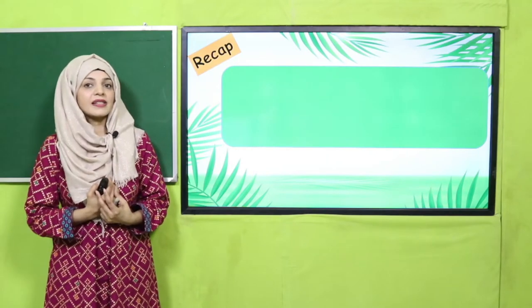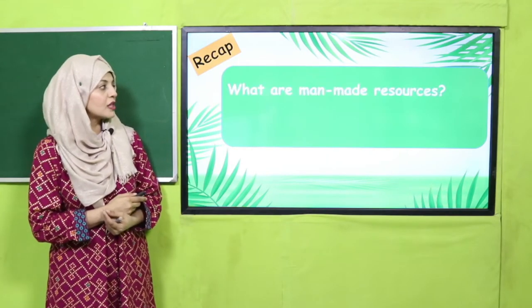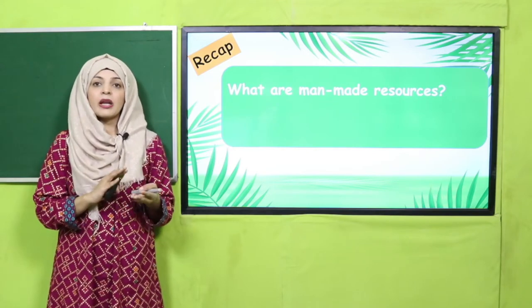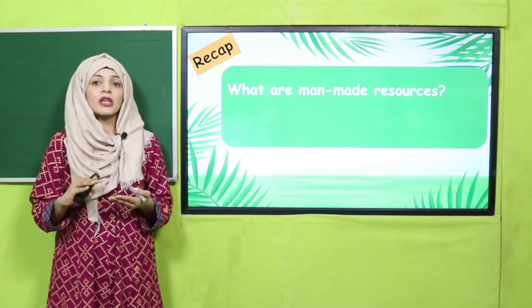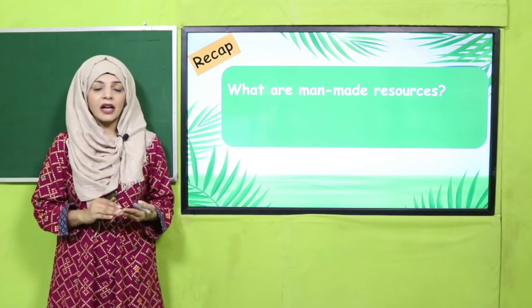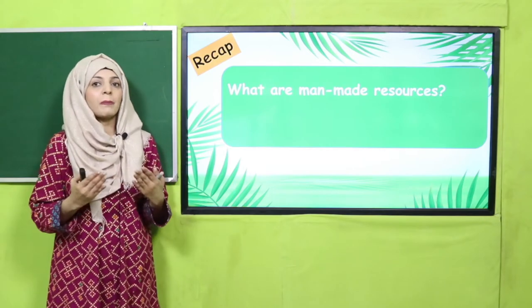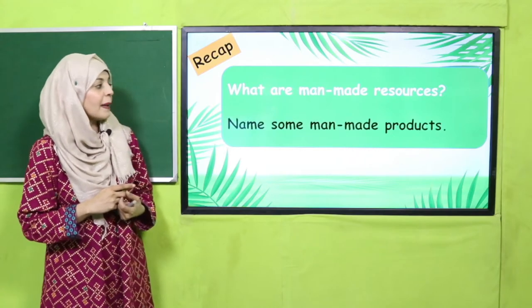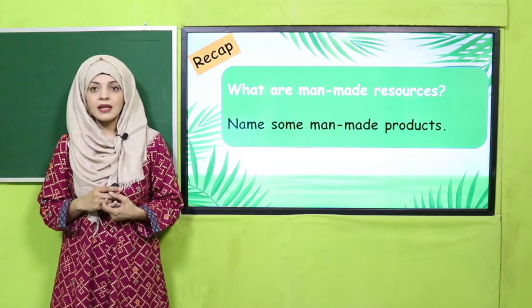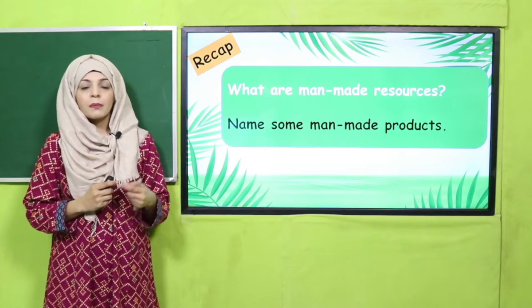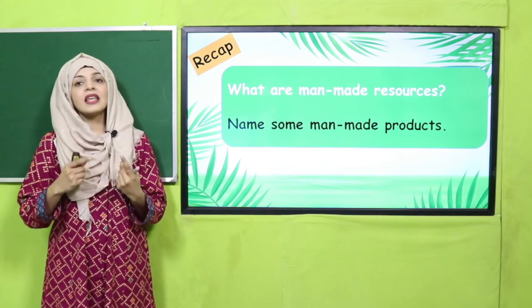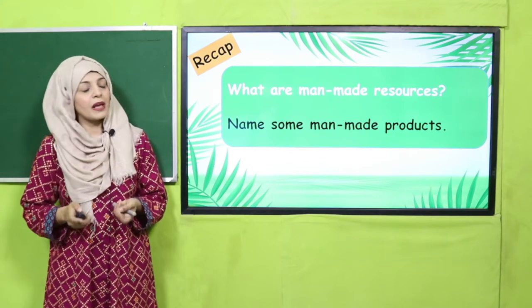Before moving on towards the lesson, let's quickly recap what we did in lesson number five. You have to answer a few questions: what are man-made resources? As we have differentiated between man-made and natural resources, any resource which is made by man is a man-made resource. Name some man-made products — bread, chair, table, pencil, sugar — these are all man-made products.